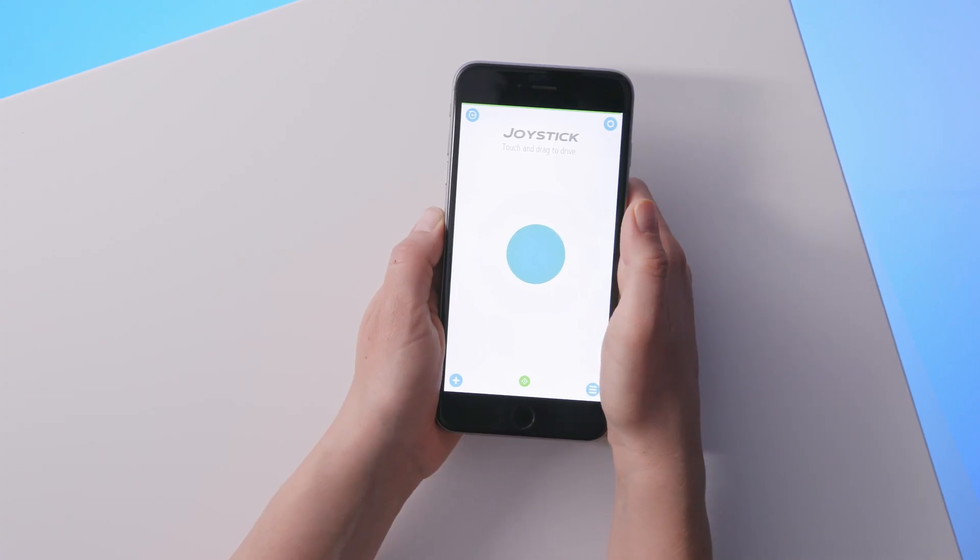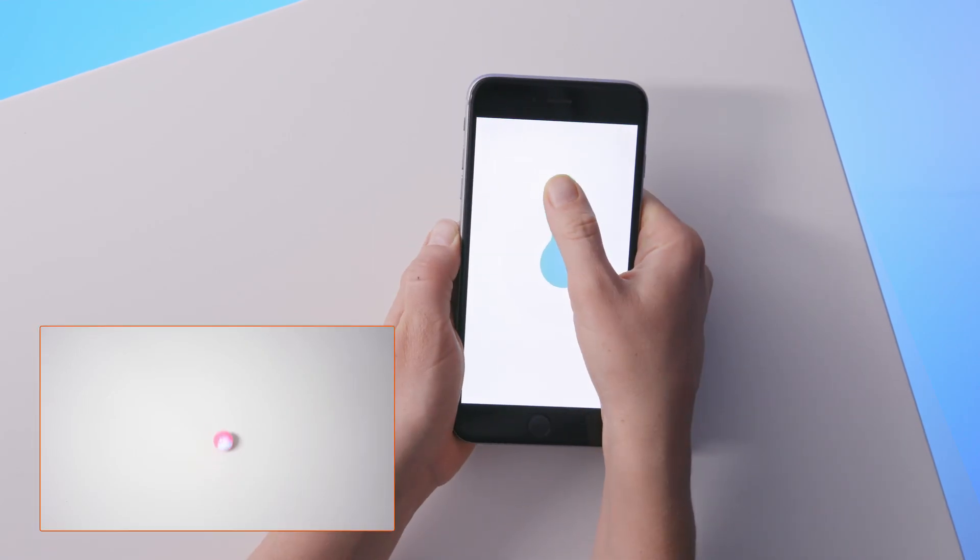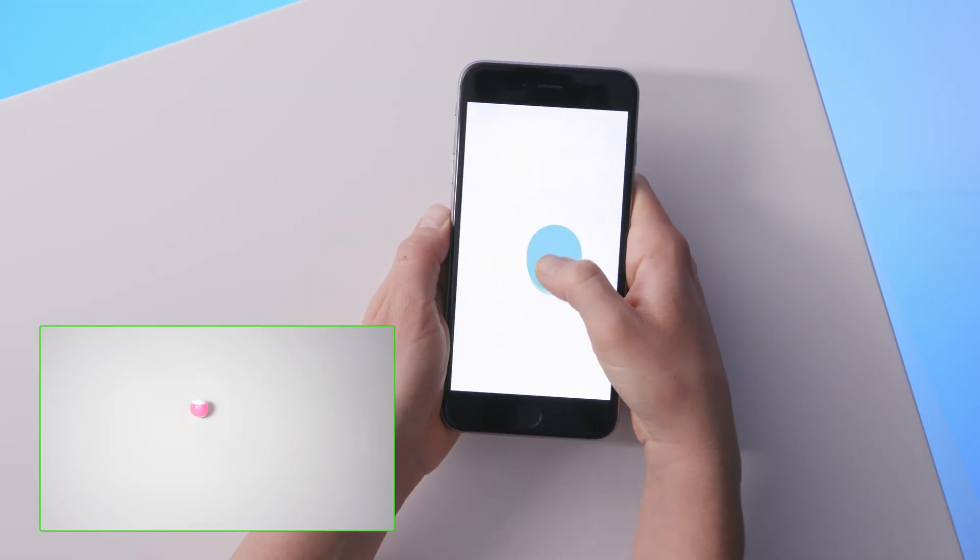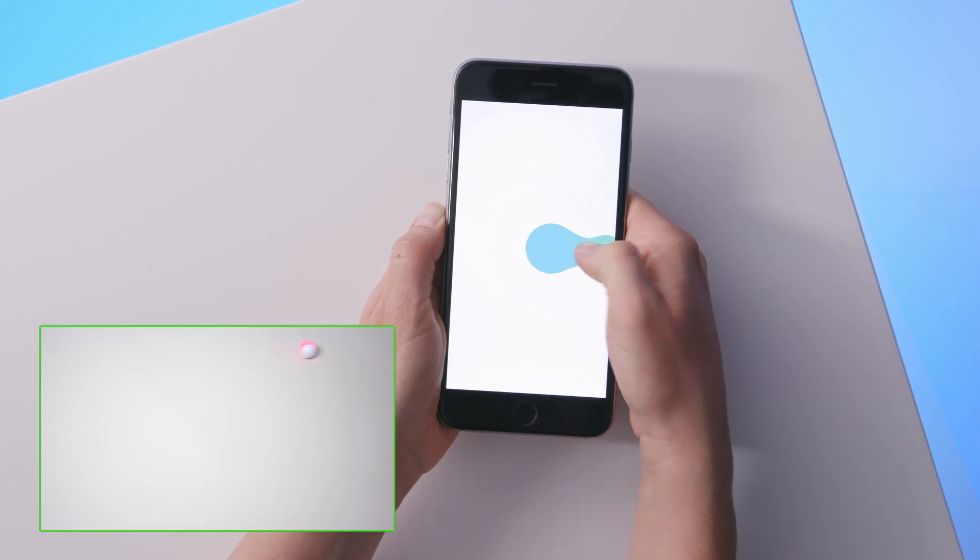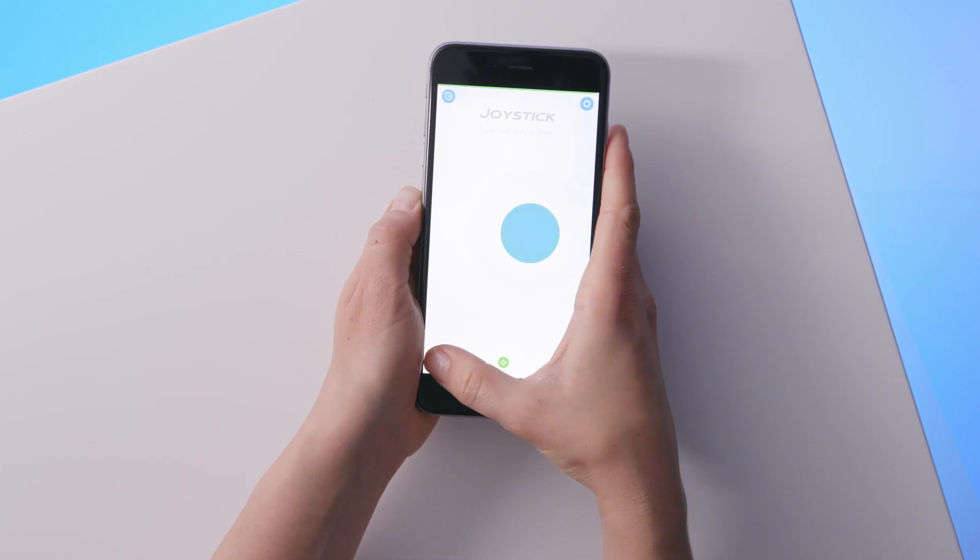Joystick driving is our most standard control scheme. Simply drag the center blob in the direction you want to go. The further out you drag, the faster mini will go in that direction. To access the other drive modes, hit the plus button in the bottom left.